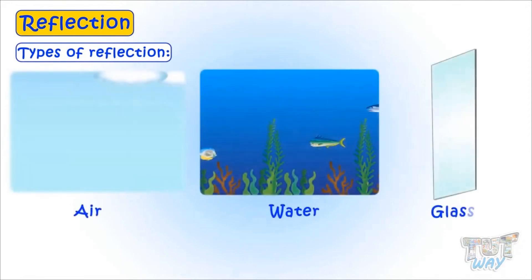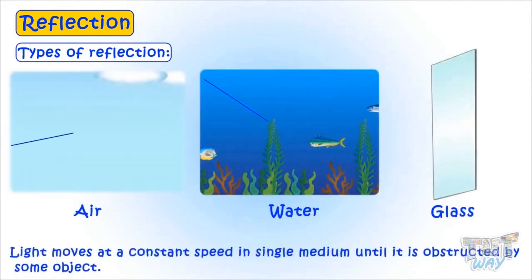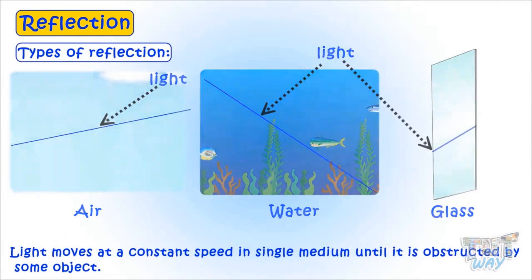We learned what is reflection and its types already. When light exists in a single medium, air or water or glass, it moves in a single straight line and at a constant speed until it is obstructed by some object.